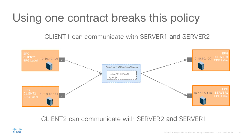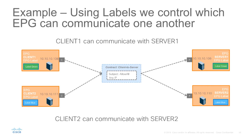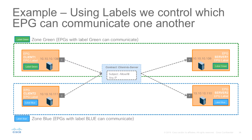If we want to keep just one single contract for this type of communication we can use labels. We can select label green for client 1 and server 1, and label blue for client 2 and server 2. This is essentially creating a sort of zoning — defining a green zone and a blue zone where, although all EPGs are part of the same application network profile and using a single contract, we're restricting who can communicate with who. Client 1 will only communicate with EPGs that have label green, and client 2 will only communicate with EPGs that have label blue.